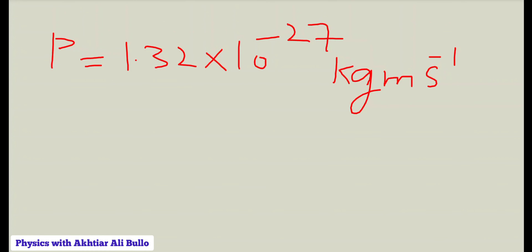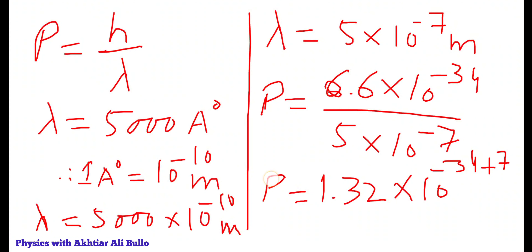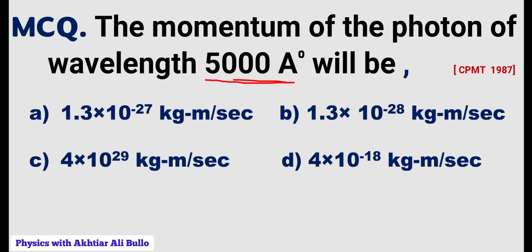So momentum is obtained as 1.32×10⁻²⁷ kg·m/s. The correct option is A: 1.3×10⁻²⁷ kg·m/s.